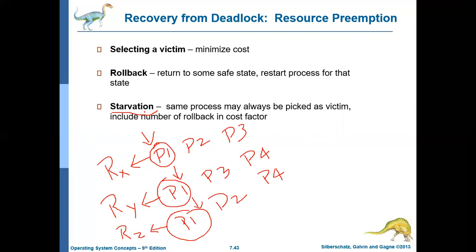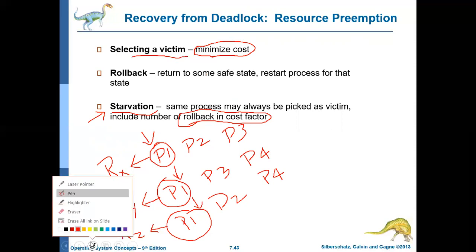To avoid starvation, we should have a maximum count on the number of rollbacks allowed for a particular process. This can be easily done by including the number of rollbacks in the cost factor. Whenever you calculate cost, include rollback also in the cost factor, because the operating system will select a process for preemption in such a way that it will reduce the cost. While calculating the cost, include the number of rollbacks also. So that if a process is rolled back two or three times, its cost will increase and the probability of that process getting selected for preemption will reduce. This is how deadlock can be recovered by preempting resources.